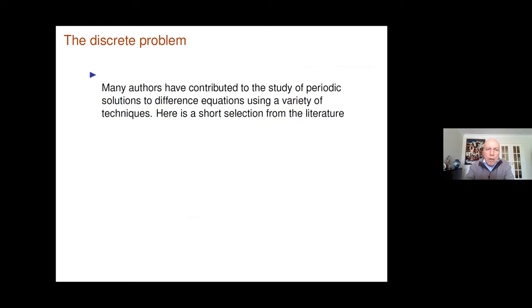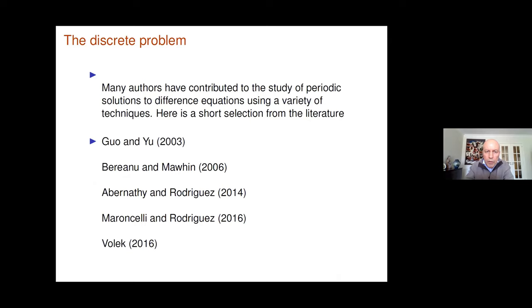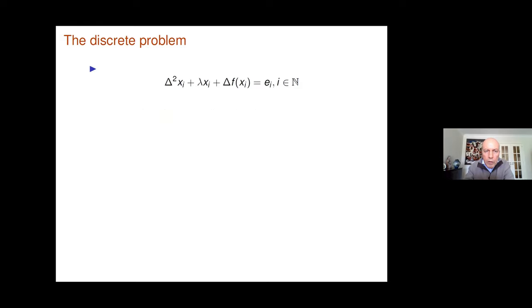At some point in all the proofs, some topological existence principle is needed. Laser in his note uses the Brouwer fixed-point theory. Our method invokes a simple version of Bolzano or maybe I should say Leray-Schauder theory, and both for the discrete and the continuous cases, some variants of Poincaré-Miranda theory. Starting with the discrete problem, I underline that many authors have contributed to the study of periodic solutions to difference equations with a variety of techniques. I select a short list from the literature going from the beginning of the 2000s to recently 2016. Let me mention that in the paper of Maroncelli and Rodriguez 2016, precisely the authors address a problem where the difficult part is the fact that the kernel of the nonlinear operator appearing in the problem is two-dimensional.